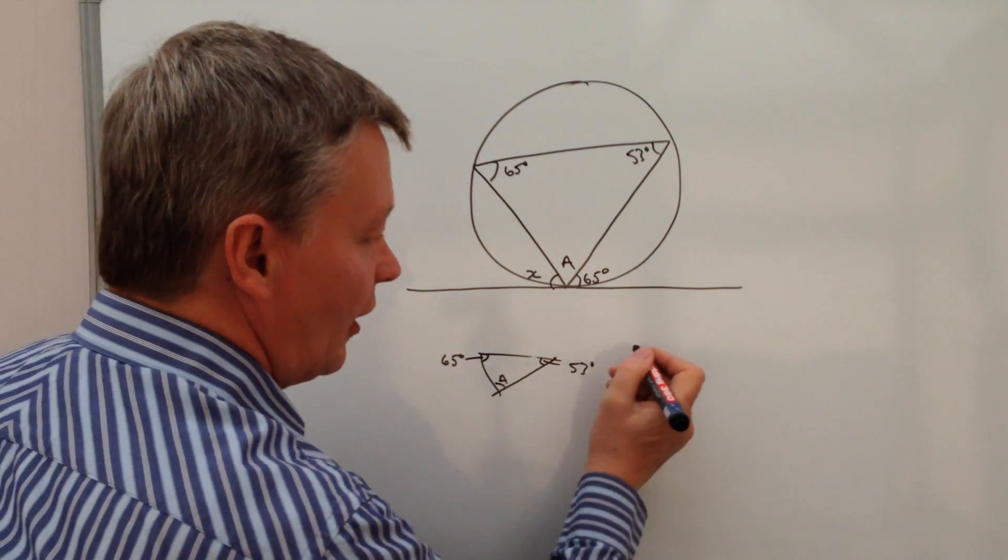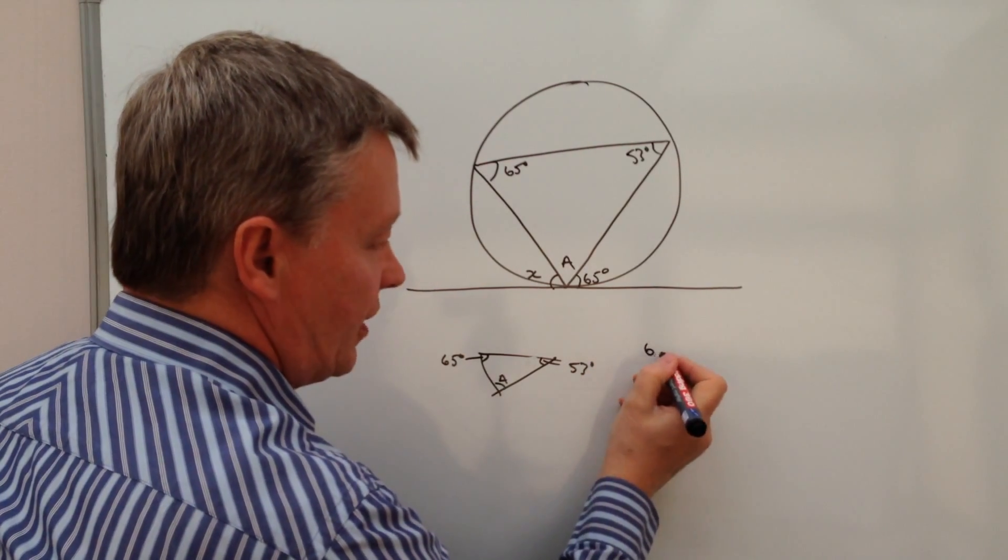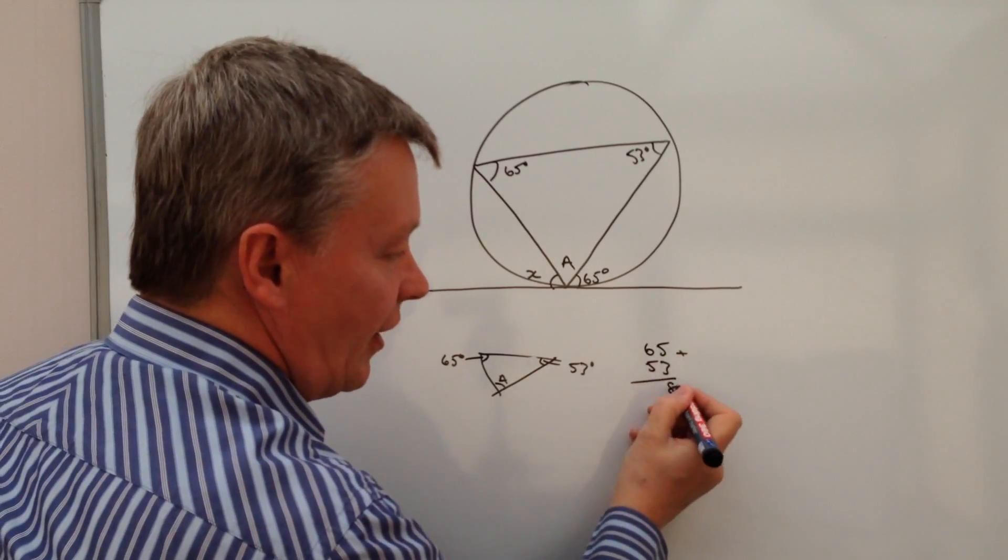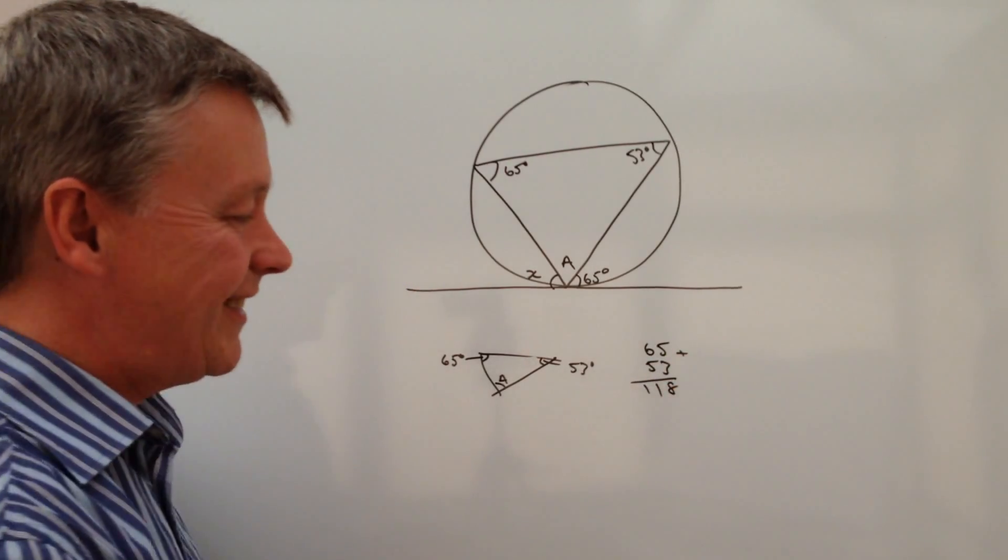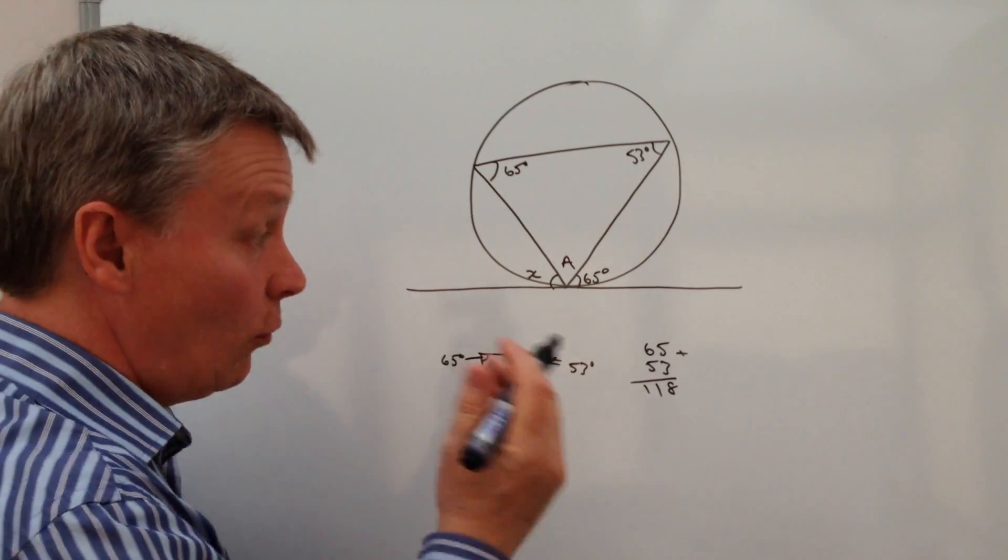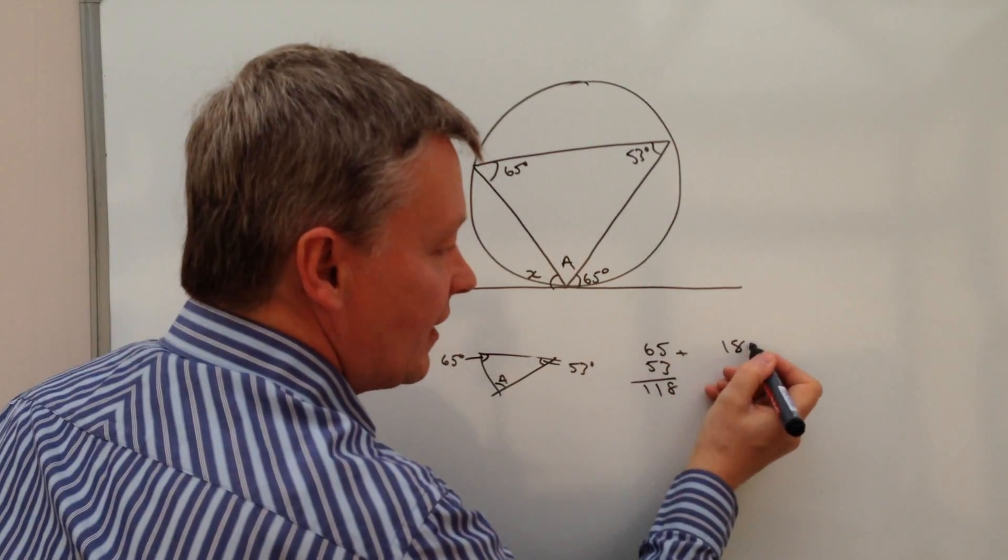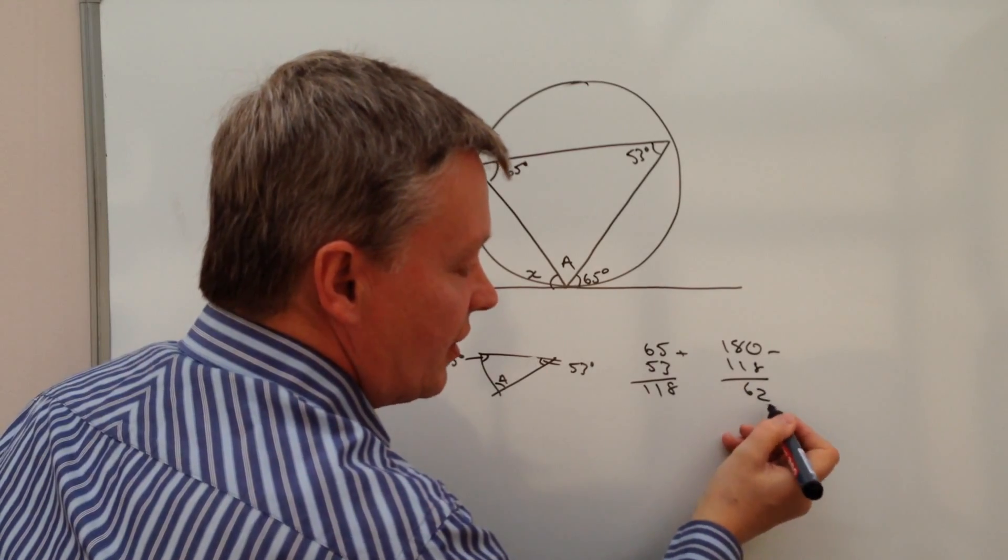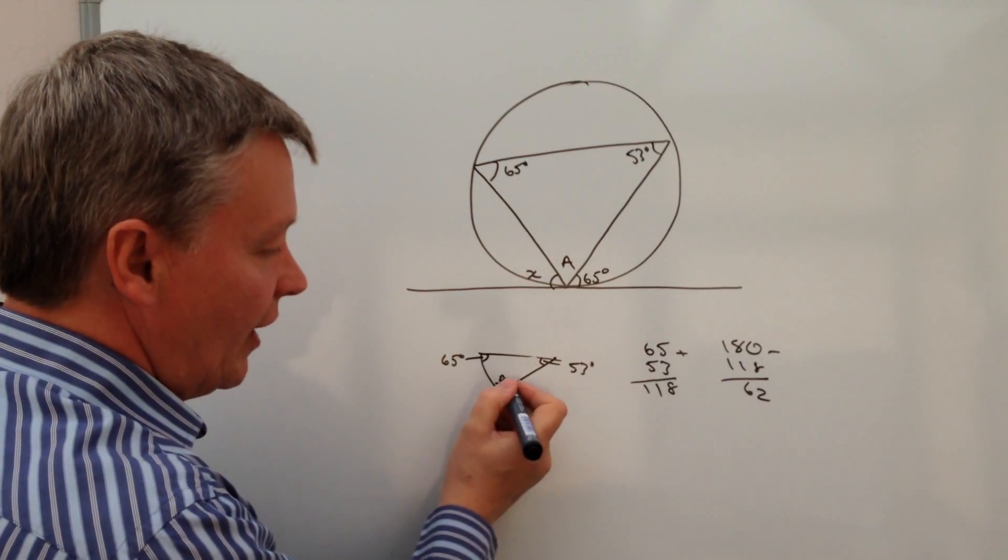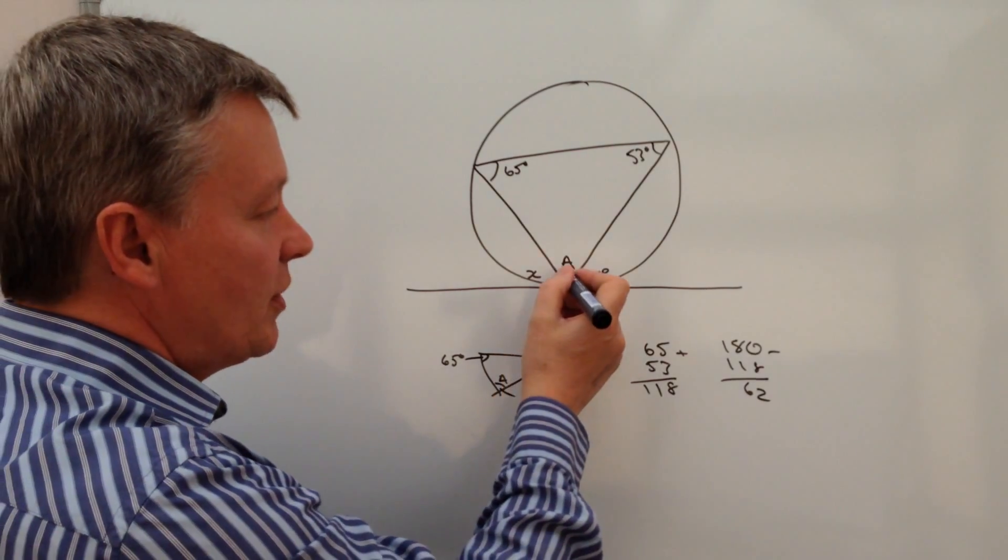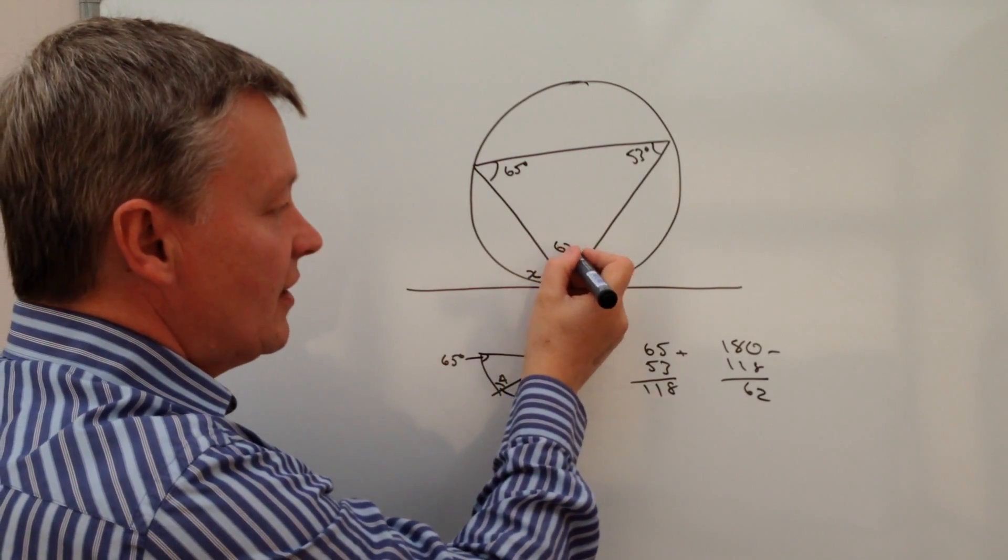Internal angles add up to 180, so I've got 65 plus 53. Well, if I add those two together, I'm going to get 118, which means that if I take that 118 away from 180, it's going to give me 62. So therefore I know now that this angle a is 62 degrees.